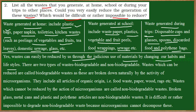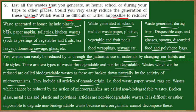Generally, waste is categorized into biodegradable and non-biodegradable waste. Any waste which is generated will be classified into these two categories. Organic waste which is further broken down naturally or by biological processes — including microorganisms — is called biodegradable waste. These wastes are made up of organic substances.